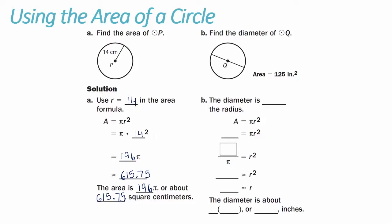B: Find the diameter of a circle with center Q. We're given that the area is 125 square inches. We know the diameter is twice the radius, so plug the area into the formula: area equals pi r squared. Divide both sides by pi to get 125 divided by pi equals r squared, which is approximately 39.79. Take the positive square root to get radius approximately 6.31. The diameter is 2 times 6.31, or approximately 12.62 inches.